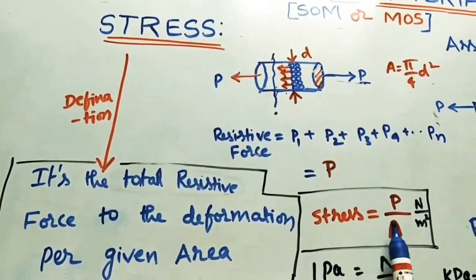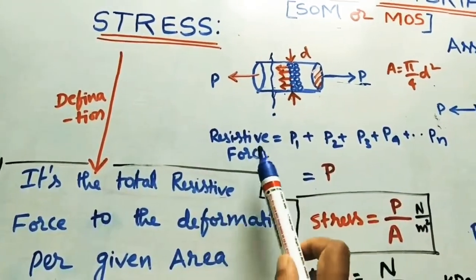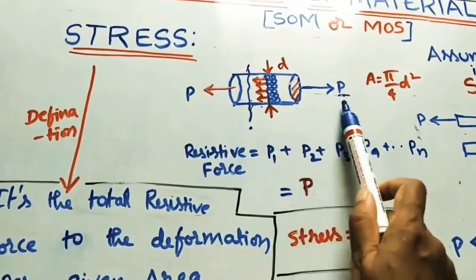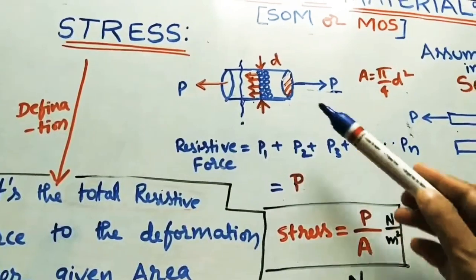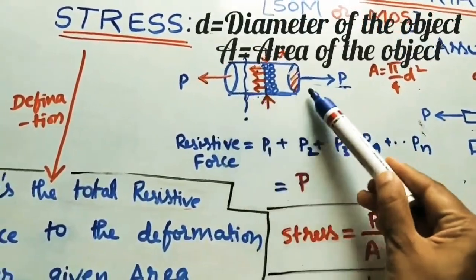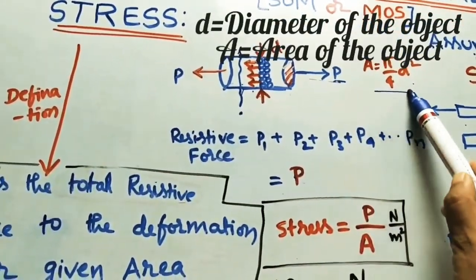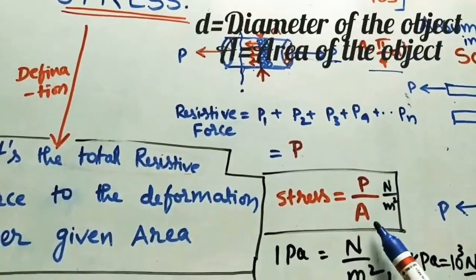So here I have written stress is equal to what is a total resistance force means? It is nothing but P. P is the applied force divided by this area. Throughout the cross section area, we are taking capital A. It is circular, that is why pi by 4 d square. Now take the area here.